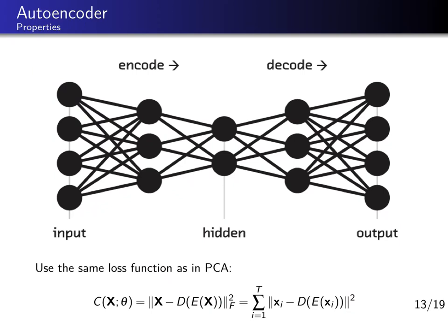In the last part of this lecture we will speak about autoencoders. Autoencoders are deep learning structures — neural network architectures that are supposed to find low-dimensional representations of the data, or low-dimensional manifolds of a given dataset. You can think of them as deep learning versions of principal component analysis, and we can substantiate this claim by comparing the autoencoder loss function to the PCA loss function.